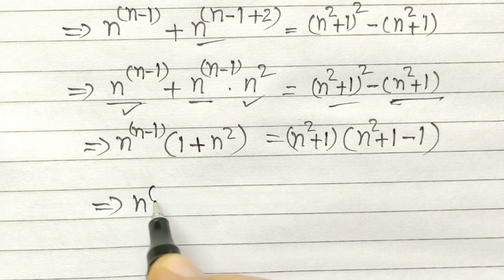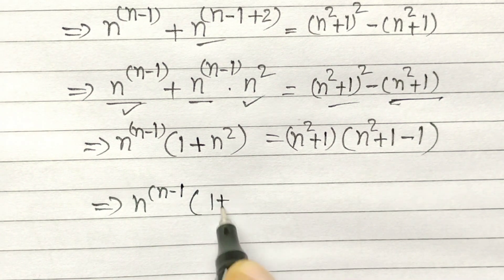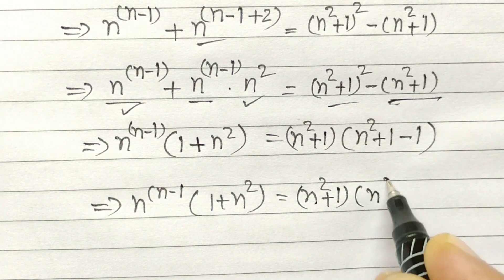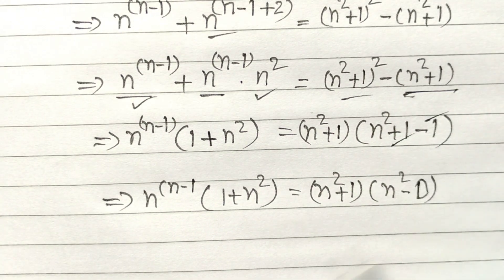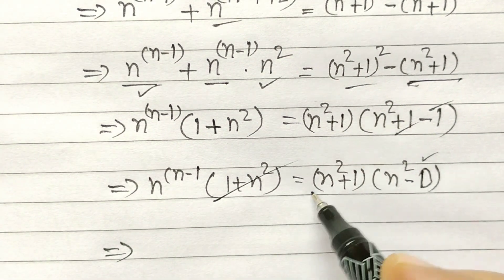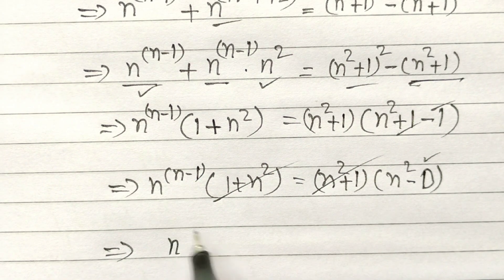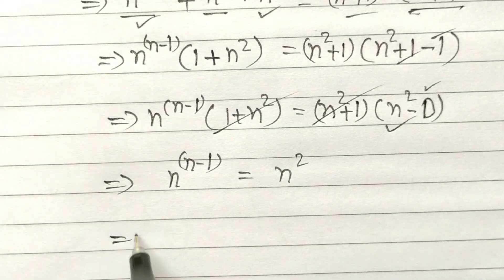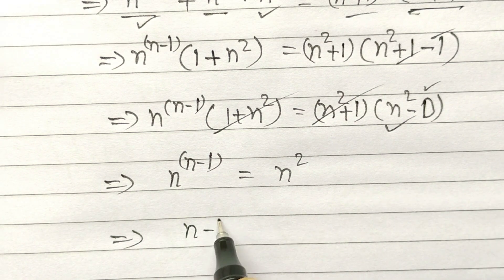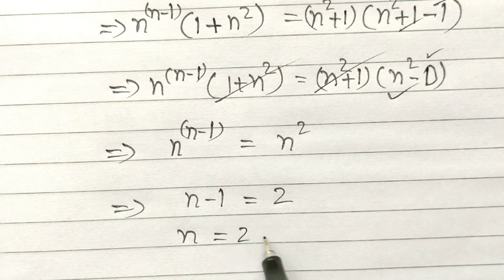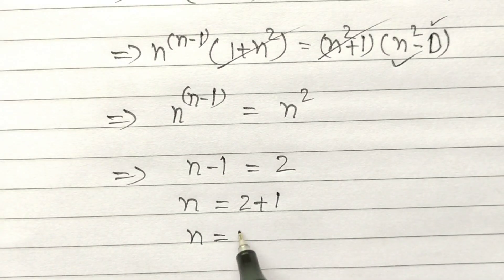Now, n to the power n minus 1 times 1 plus n squared is equal to n squared plus 1 times n squared, so these cancel out. So, n to the power n minus 1 is equal to n squared. Therefore, n minus 1 is equal to 2, so n is equal to 2 plus 1, or n is equal to 3.